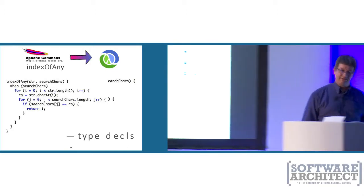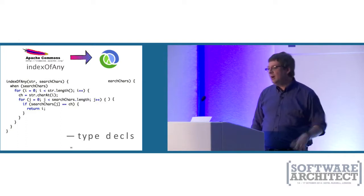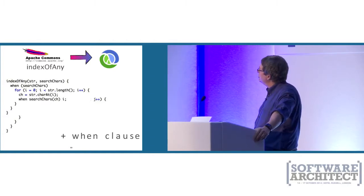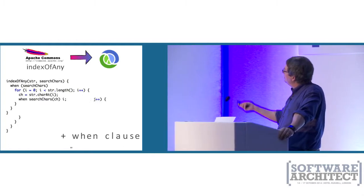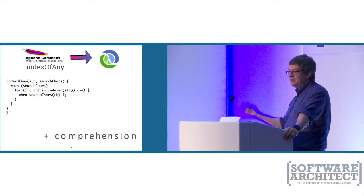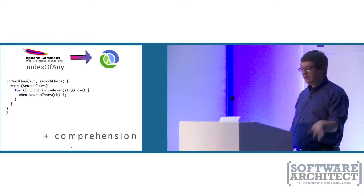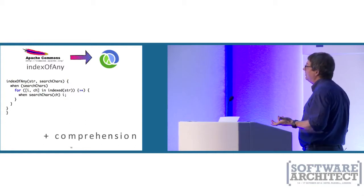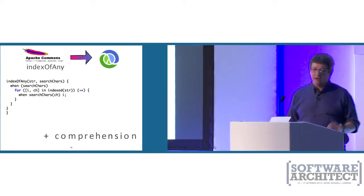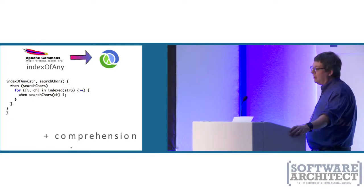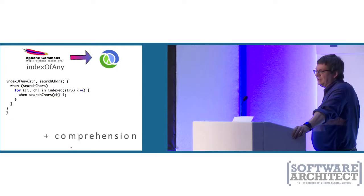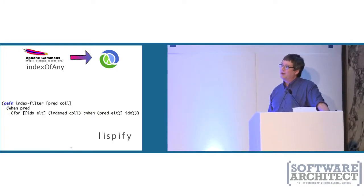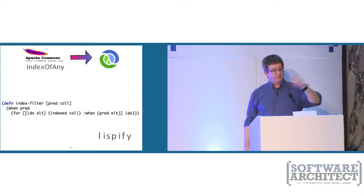Here's one last example: I'm going to take the common Java String manipulation routine from Apache Commons, 'indexOfAny,' and slowly morph it into Clojure. What indexOfAny does: you give it a string and some characters, and it tells you the first occurrence of one of those characters in the string. First I simplify the corner cases — Clojure data structures handle empty strings automatically. Then remove type declarations since Clojure is strongly dynamically typed. Then replace the innermost if statement with a 'when' that returns the index.